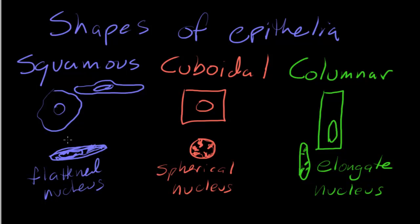So, just a quick review. If you see that flattened nucleus or you look at the cell from the side and it's squashed flat, that's going to be a squamous epithelium. If the cell looks like a square from the side and or it has a nice spherical nucleus, that's going to be a cuboidal epithelium. And finally, if the cell is tall and skinny and or has an elongate or cigar-shaped nucleus, that's going to be a columnar epithelium. I hope this helps. See you next time.